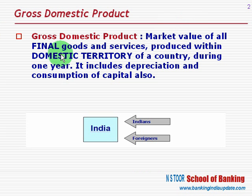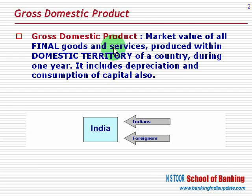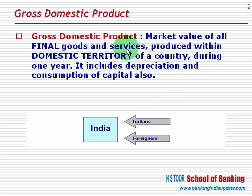So the market value of all final goods and services. Goods and services may be intermediary goods, which are used as raw material to produce other goods, or final goods, which may be consumed or used as capital goods. Here we take into consideration only the final goods and services, not the intermediaries. These goods and services are produced within the domestic territory of a country, and the period is normally one year. This is called GDP, or Gross Domestic Product.